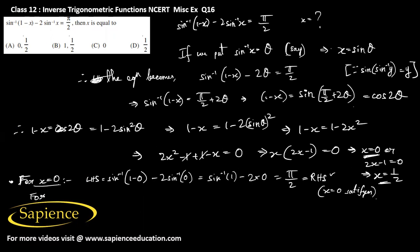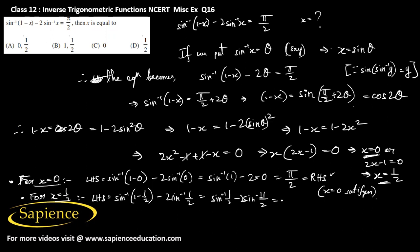For x equal to 1 by 2, the left hand side becomes sine inverse of (1 minus 1/2) minus 2 sine inverse (1/2), which is sine inverse (1/2) minus 2 sine inverse (1/2), giving minus sine inverse (1/2). Since sine 30 degrees equals 1/2, this equals minus pi by 6.